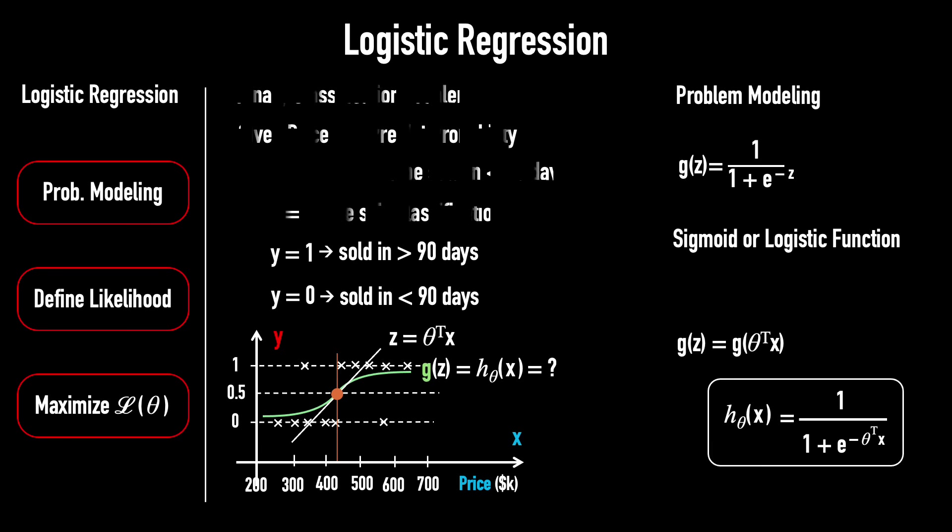Now, let's return to our framework and start with step 1, probabilistic modeling, to express this logistic model in probabilistic form. As previously defined, the probabilistic form is written as p(y|x; θ).